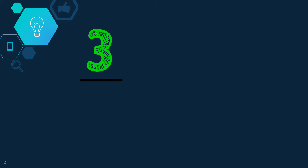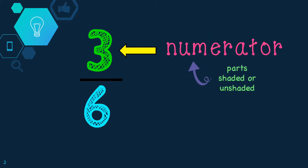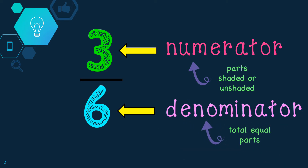A fraction describes how an object is partitioned or divided into equal parts. Fractions are written as numerator over denominator, where the numerator represents the parts indicated or parts that are shaded or not shaded, and the denominator represents the total equal parts a shape or figure has been partitioned or divided into.